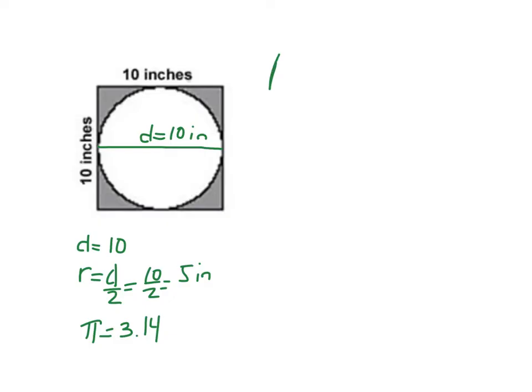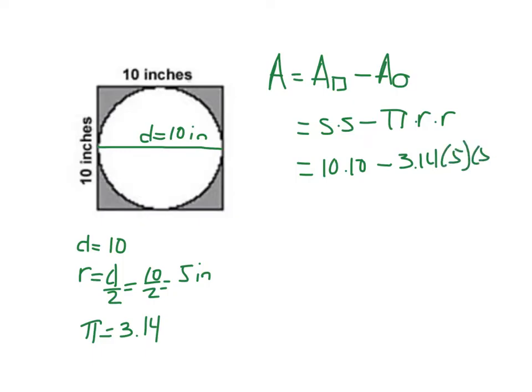Now I'm ready to find the area. So to find the overall area, I take the area of the square and I'm going to subtract out the area of my circle. So the area of the square is the side times the side minus the area of the circle is pi times r times r. So side times side would be 10 times 10 minus pi is 3.14 times the radius is 5 times 5.